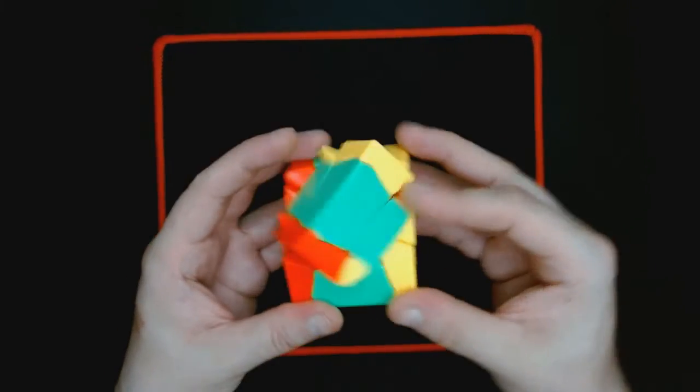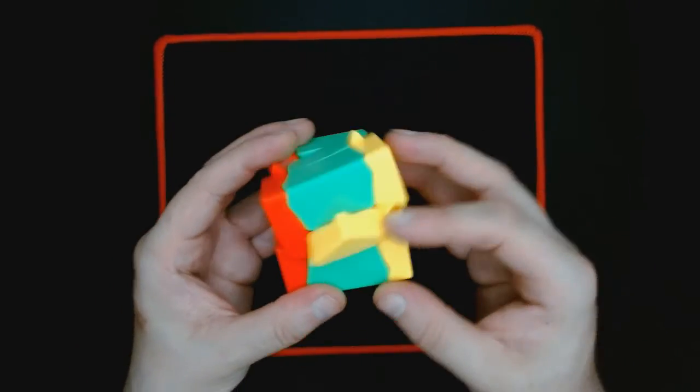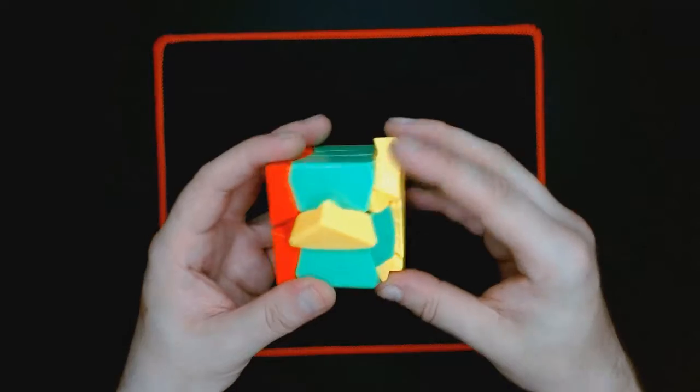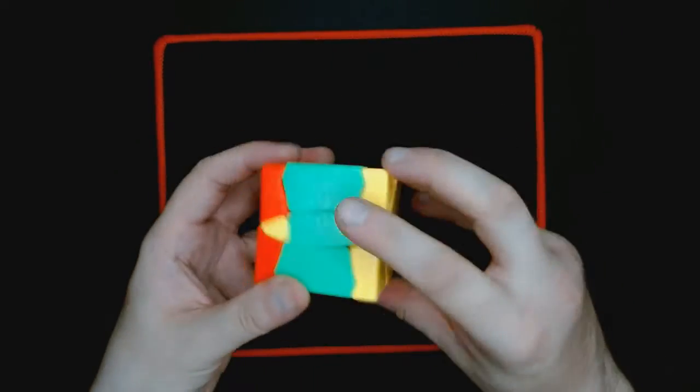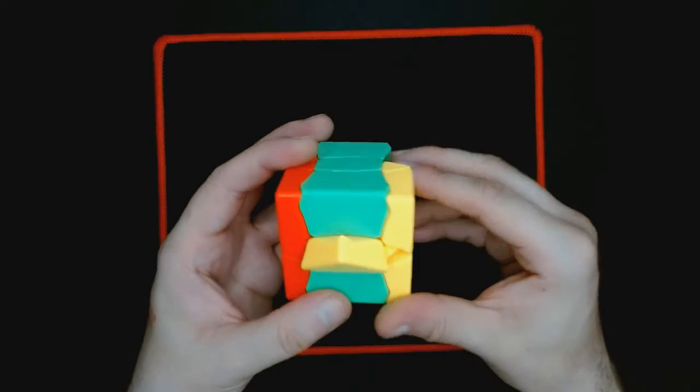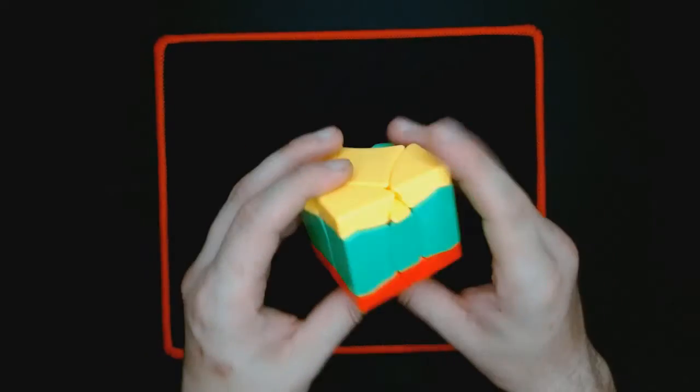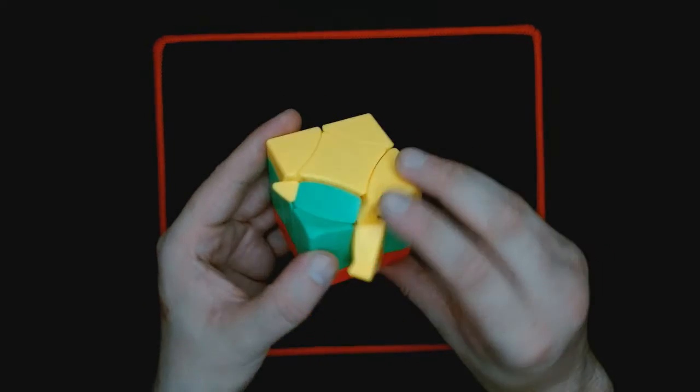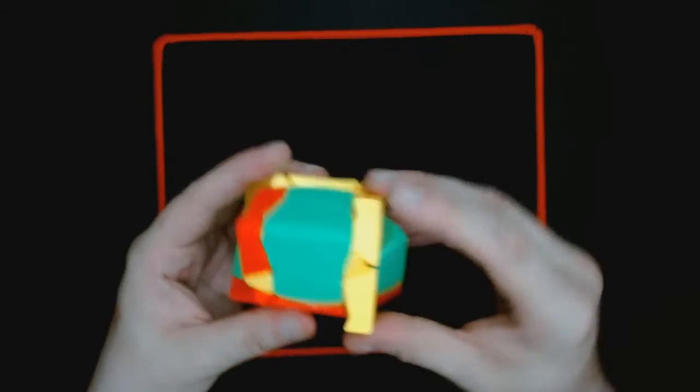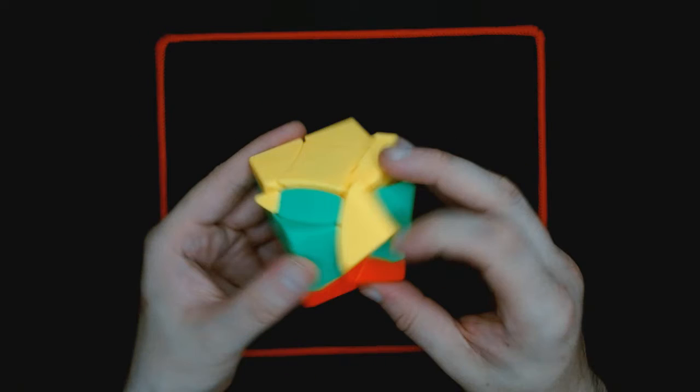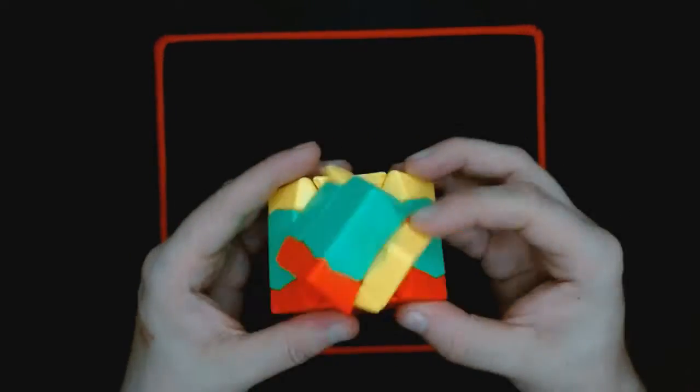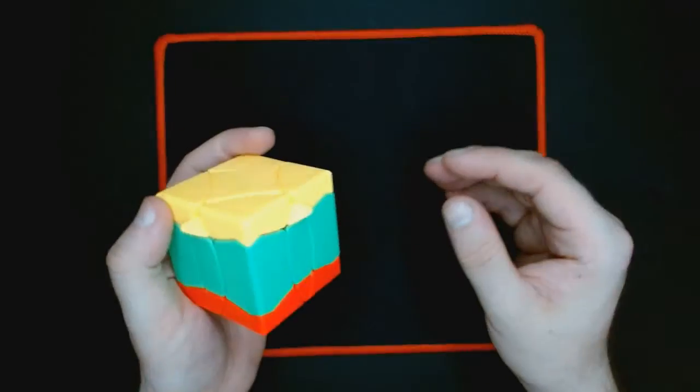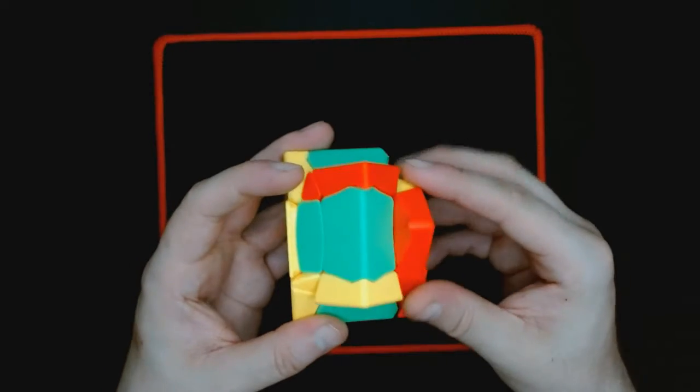It is a really smooth turning puzzle. It's just hard to grip sometimes. I don't know what that was. I think I might have messed up. Nothing like solving the puzzle twice, huh? How did this happen?